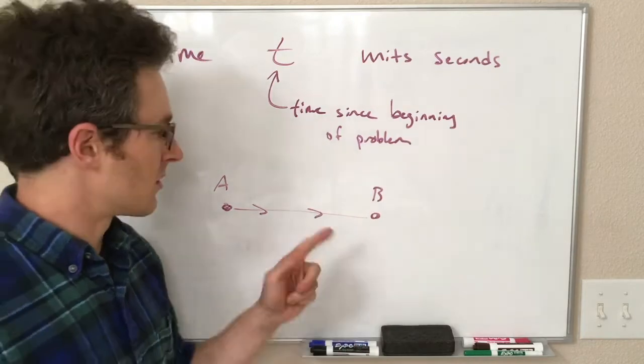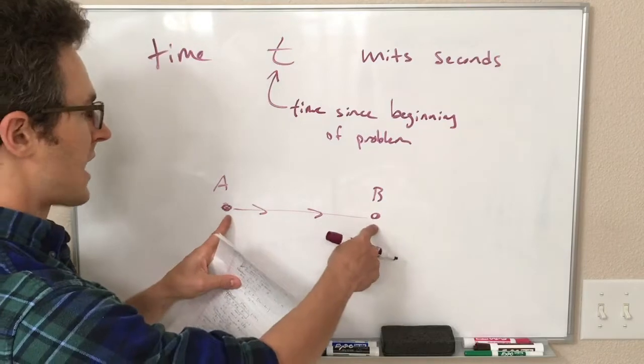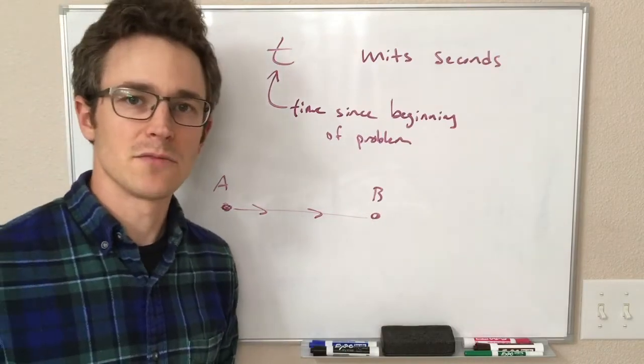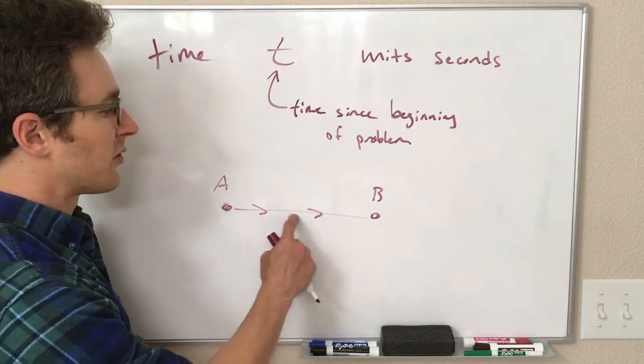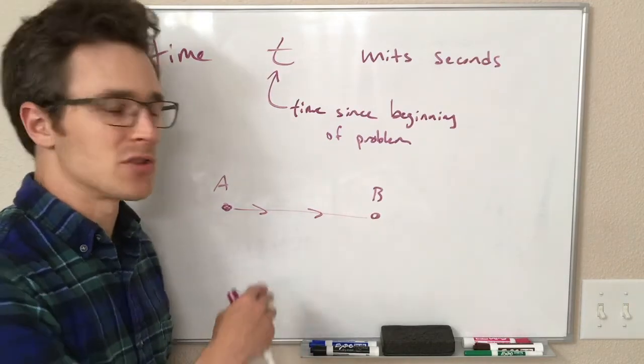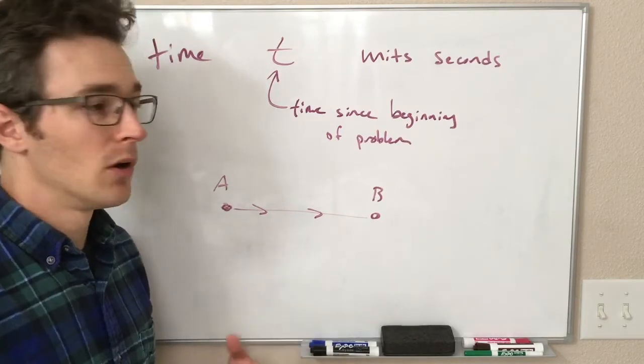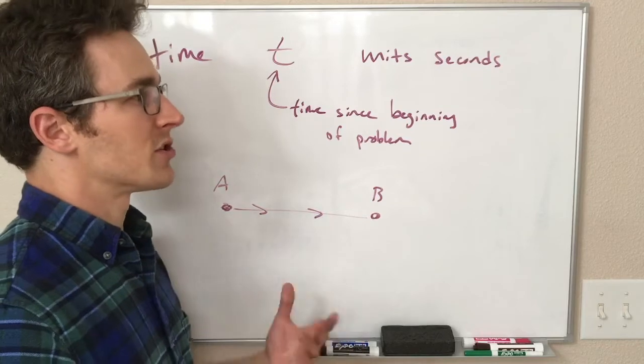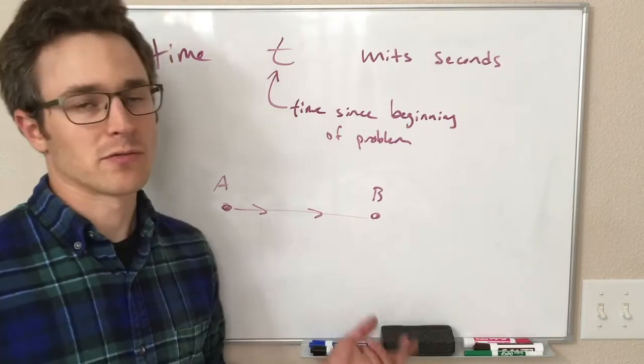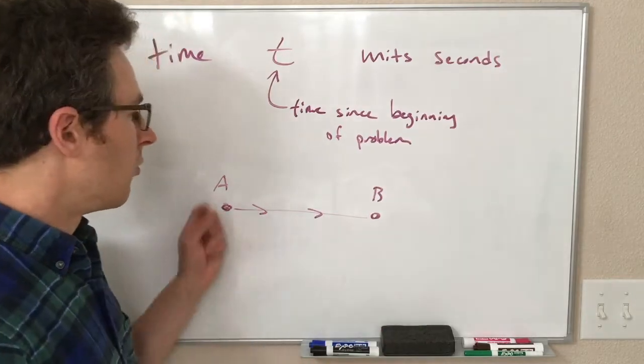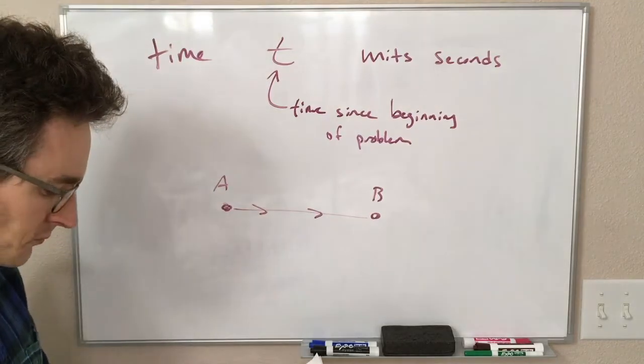And right when we get to B, it's going 98, 99, 100, and I stop it there, and I say, oh, it took me exactly 100 seconds to go that distance, right? So we have different time values that correspond to every moment in time that we were walking along there. So if we wanted to know what our position was 10 seconds after we started or 90 seconds after we started or something like that, we have a variable to talk about that. So that is our time t.